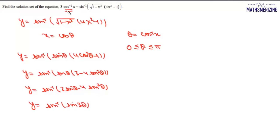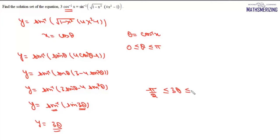We need the result to equal 3θ, since θ = cos⁻¹(x) and the left-hand side is 3·cos⁻¹(x). The expression sin⁻¹(sin 3θ) = 3θ if and only if 3θ lies within the principal value range of sin⁻¹, which means 3θ must lie between -π/2 and π/2.